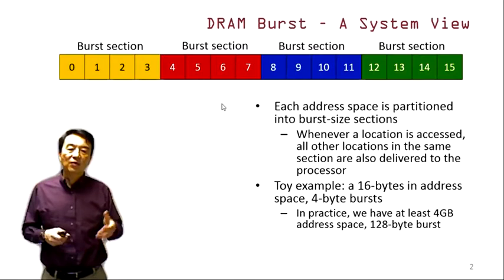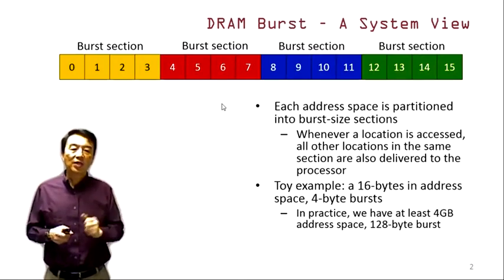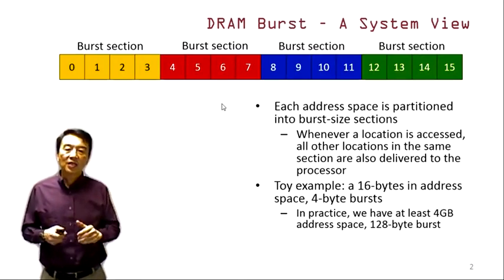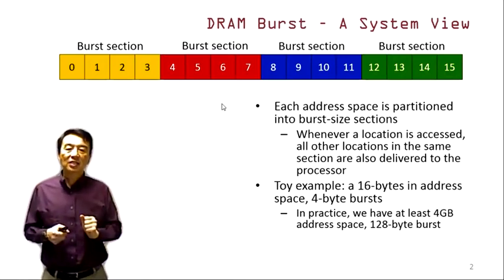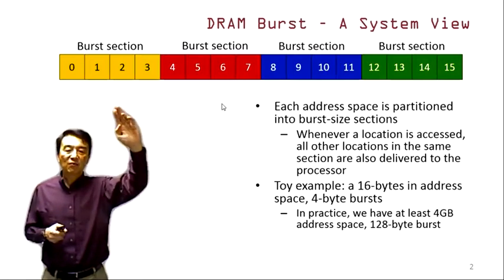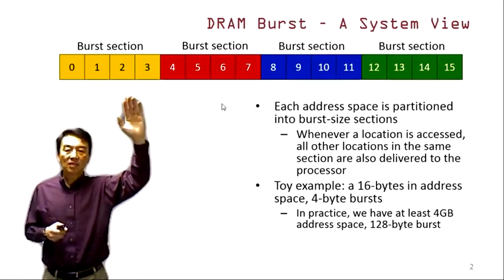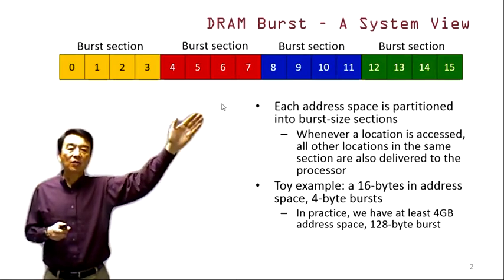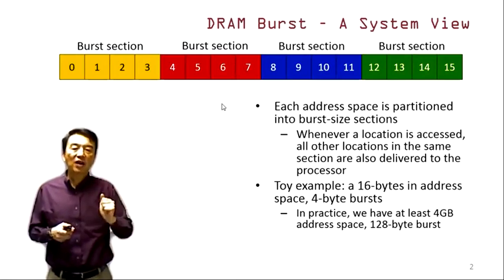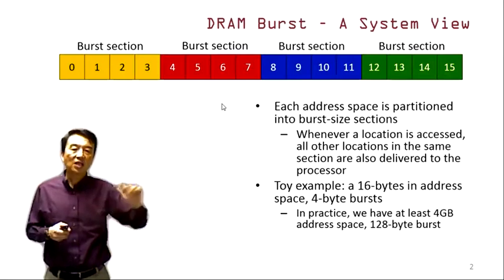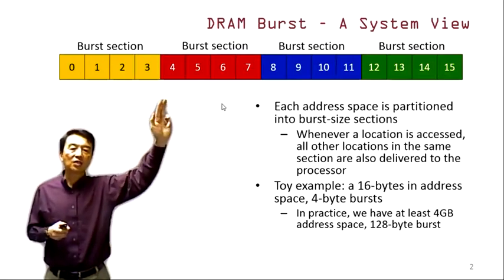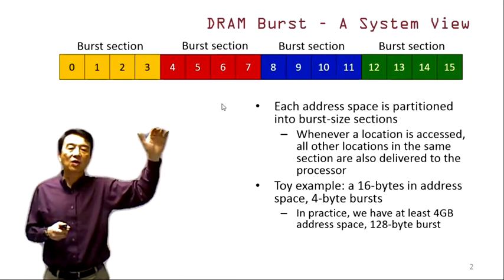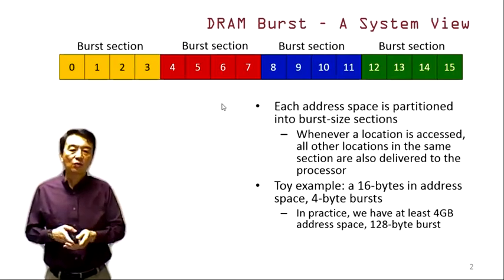For example, if we have a 16-byte toy address space and a very small 4-byte DRAM burst section, we can visualize the address space partitioned into four burst sections. Every time one of the locations — say location 5 — of a burst section is accessed, all the other locations in that section (4, 5, 6, 7) will also be delivered to the processor along with location 5.